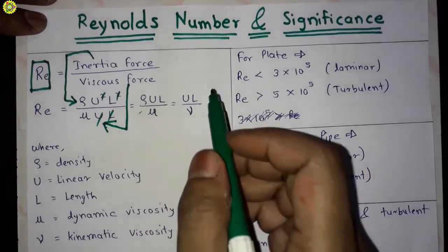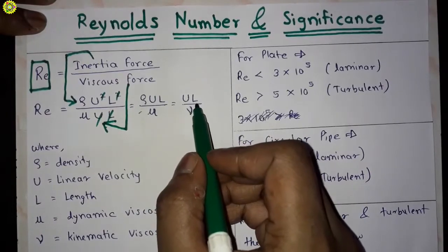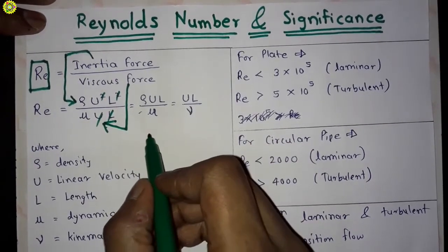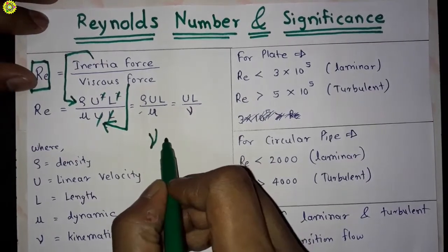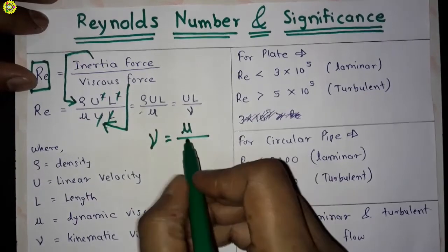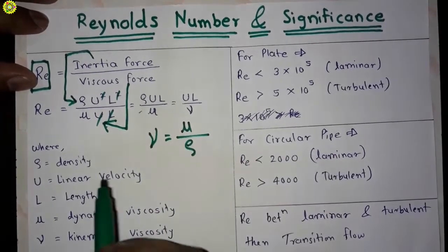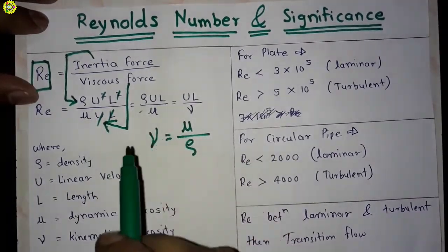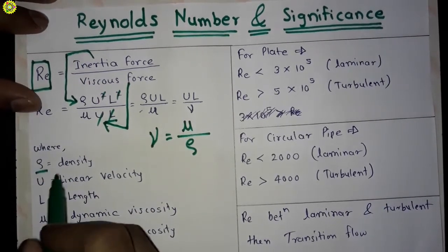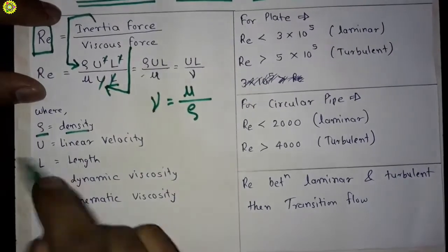Which is equal to u l upon nu. Here, kinematic viscosity is given as nu, which is equal to dynamic viscosity upon density. In this equation or formula of Reynolds number, rho is density, u is linear velocity, l is length, mu is dynamic viscosity, and nu is kinematic viscosity.